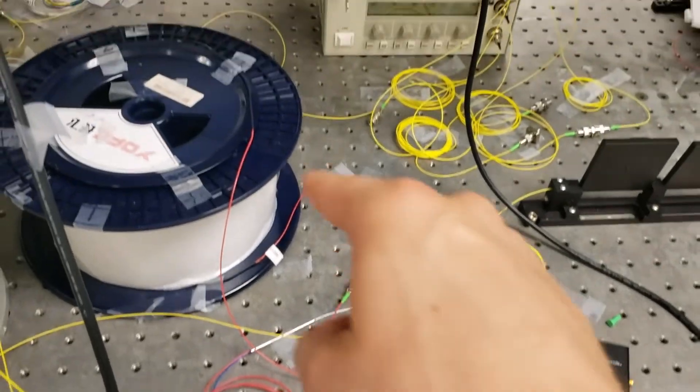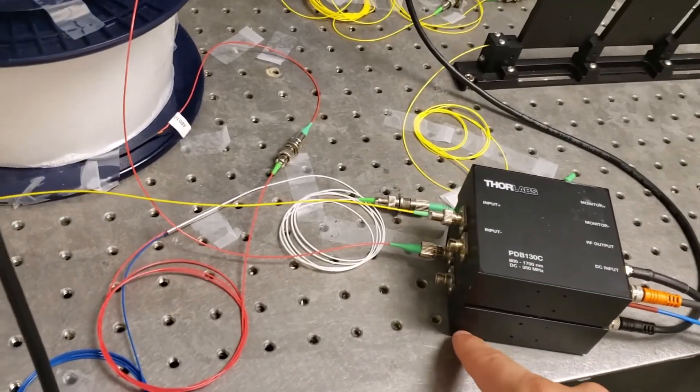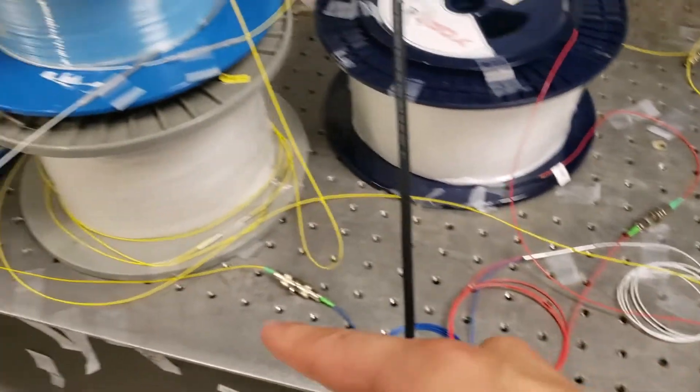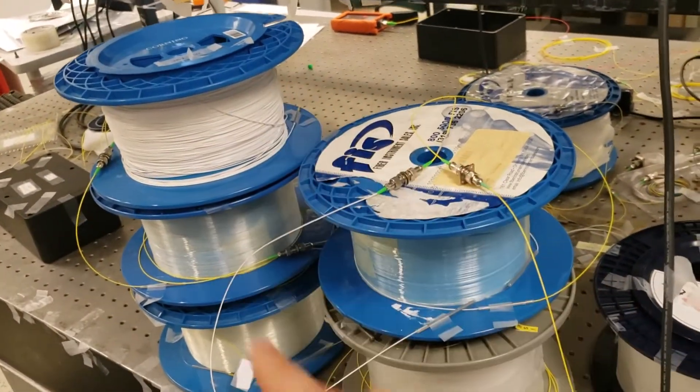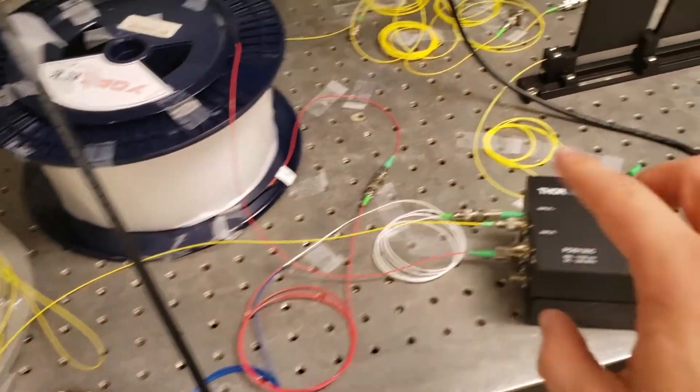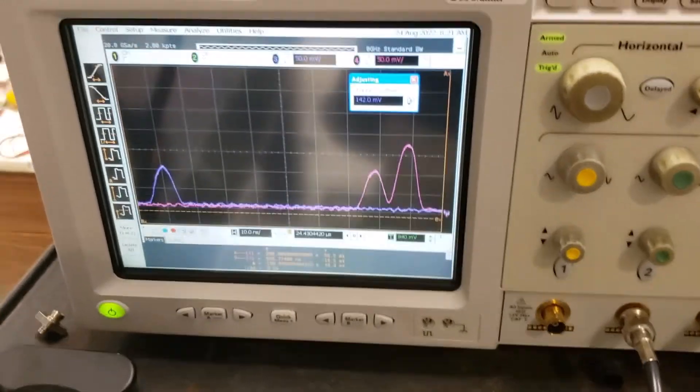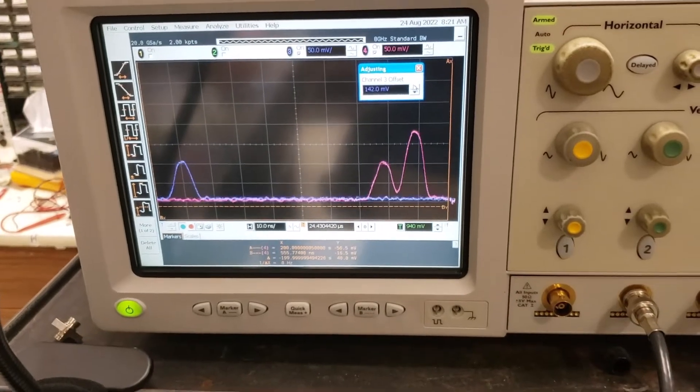and a red one. The red one goes into this spool of polarization maintaining fiber and then into the photodiode down here, and the blue line goes into all of these fiber spools here, which in total add up to around 5 km worth of single mode fiber. Their output then goes into the photodiode here on top, and we've connected that to the oscilloscope as you can see.